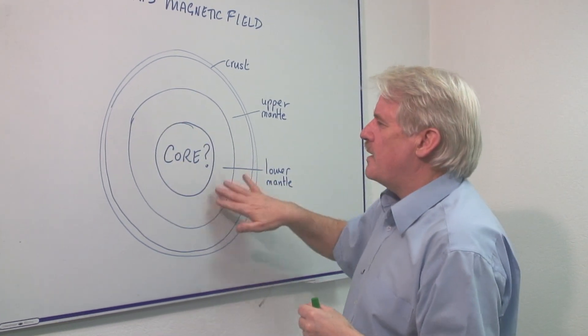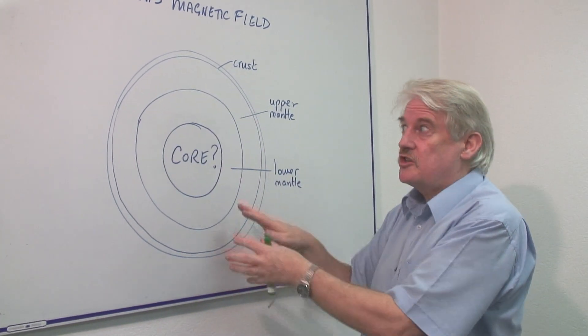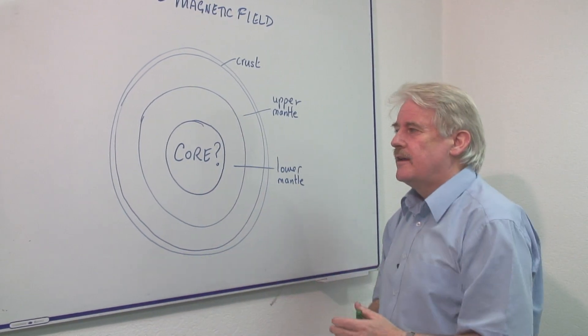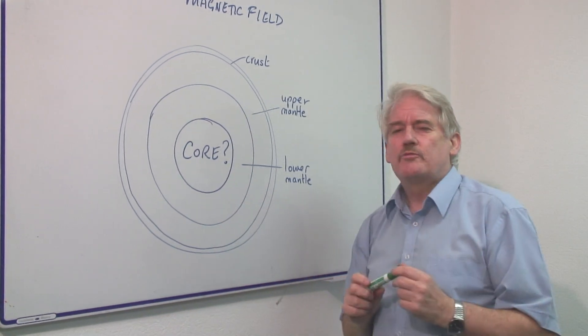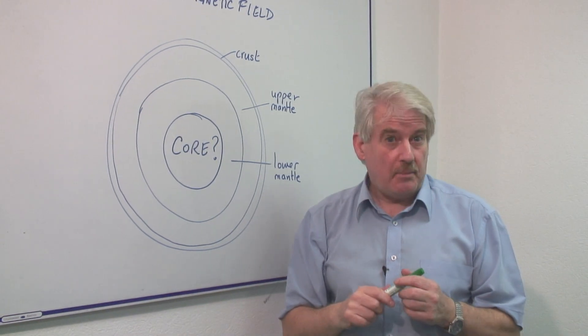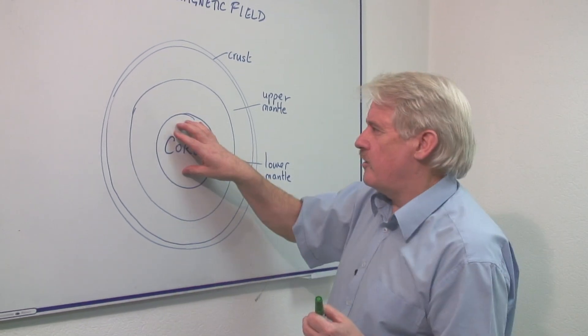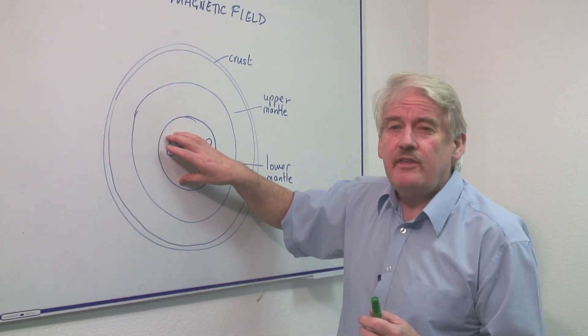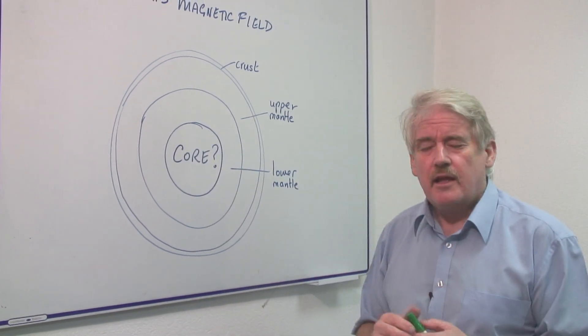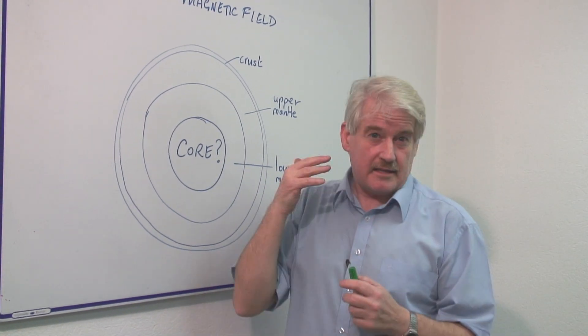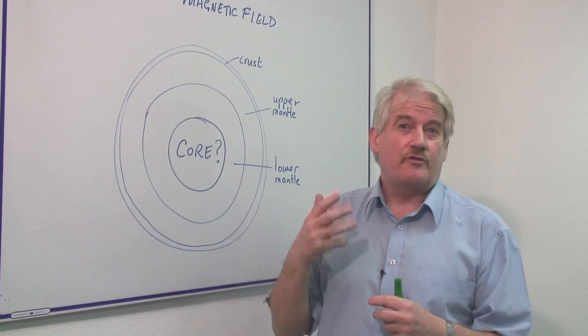Underneath there is a lower mantle, slightly different structure but similar material. It is the core that we believe to be liquid. And people have done experiments on materials that they think the core is made of. They believe the core contains quite a high proportion of iron.